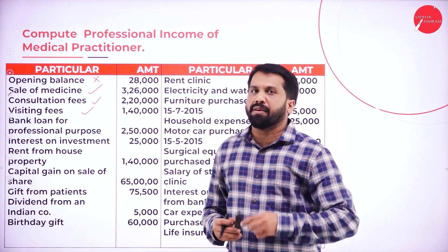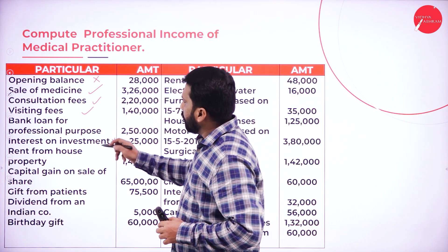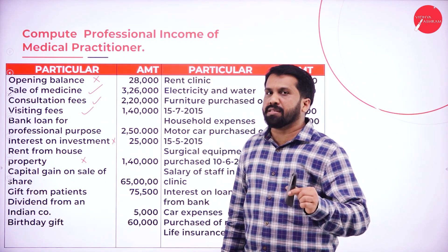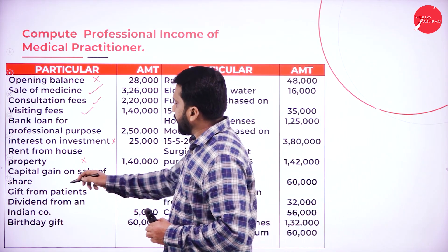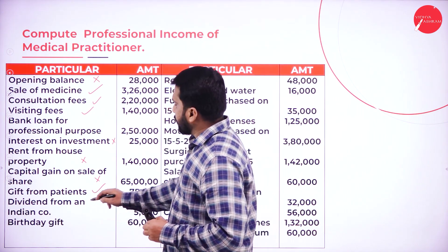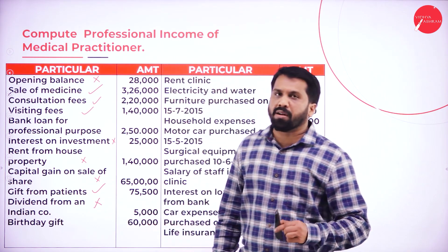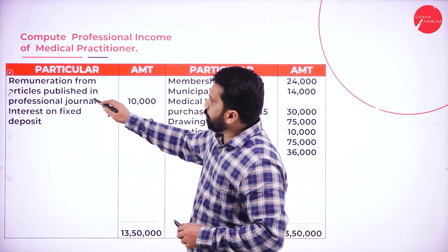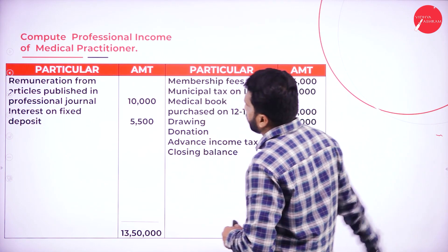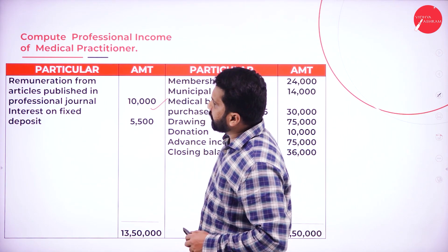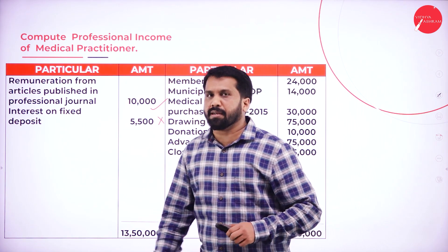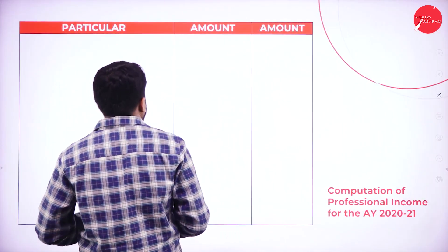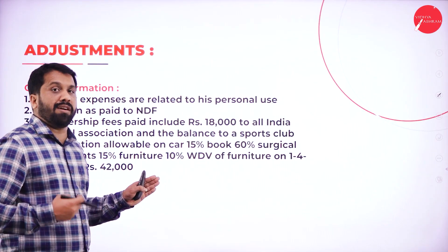Whatever interest is paid on the loan, that we have to consider. Rent from house property is personal. Capital gain on sale of shares will not come. Gift from patient — yes, it will come. Dividend from an Indian company is exempted and not part of your profession. Birthday gift is personal. Remuneration from an article published in a professional journal — we have to take 10,000. Interest on fixed deposit is not part of your income.